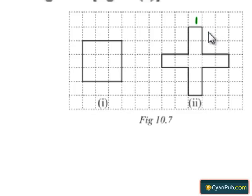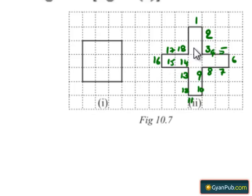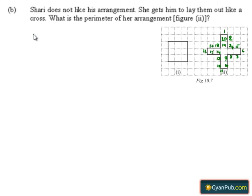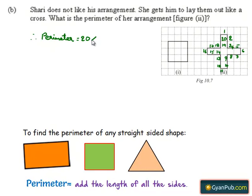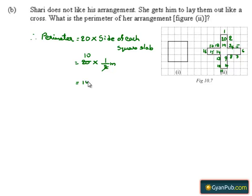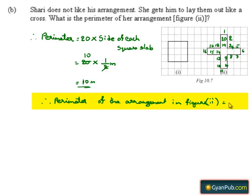Counting the sides: 1, 2, 3, 4, 5, 6, 7, 8, 9, 10, 11, 12, 13, 14, 15, 16, 17, 18, 19, and 20. The perimeter of the cross arrangement is 20 multiplied by the side of each square slab. This is equal to 20 multiplied by one-half meter. That gives 10 times, so the perimeter is 10 meters. Therefore, the perimeter of the arrangement in figure 2 is equal to 10 meters.